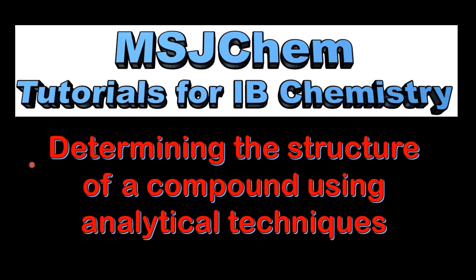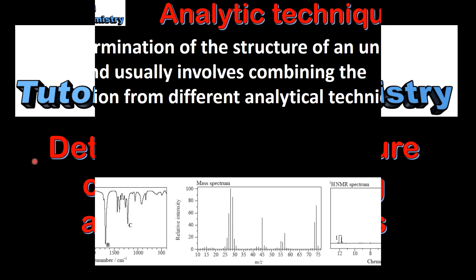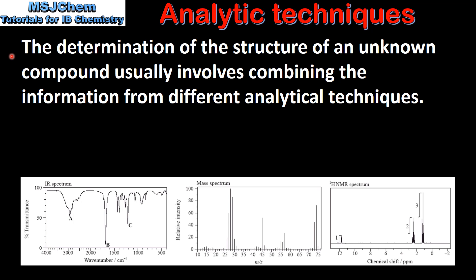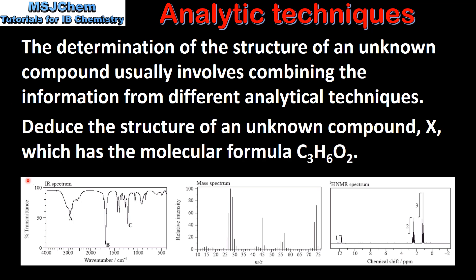This is MSJChem. In this video I'll be looking at determining the structure of a compound using analytical techniques. The determination of the structure of an unknown compound usually involves combining the information from different analytical techniques. We'll look at an infrared spectrum, a mass spectrum and a H1NMR spectrum, and use them to deduce the structure of an unknown compound X which has the molecular formula C3H6O2.